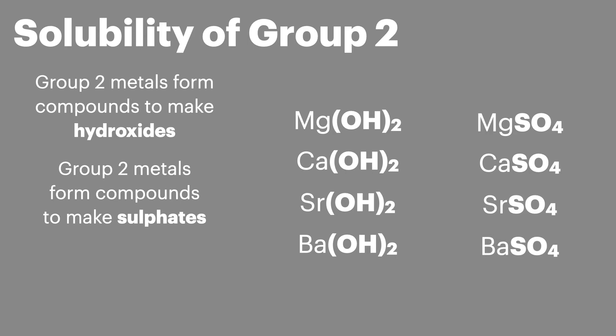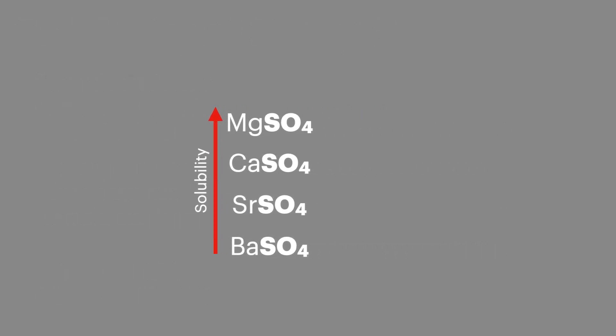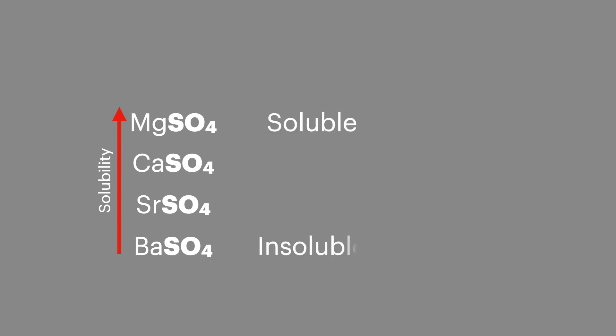These different compounds have different trends in solubility, and it's these differences in solubility which give us the test for sulfate ions — with magnesium sulfate being soluble and barium sulfate being insoluble and forming a white solid.